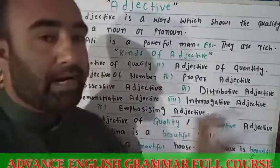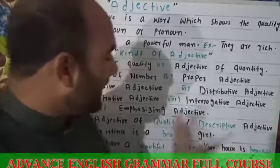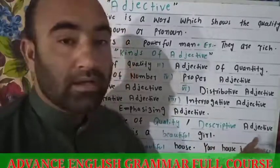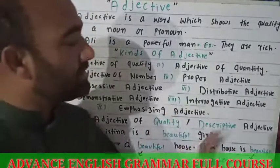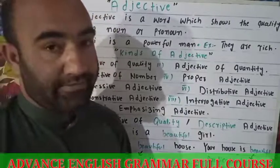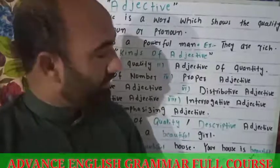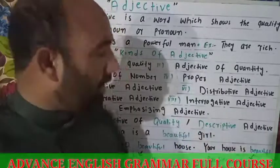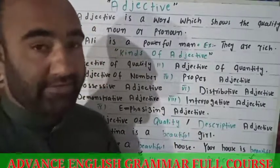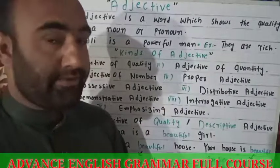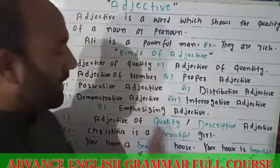First we have to talk about adjective of quality. This is the first kind of adjective. Adjective of quality are also called descriptive adjective — both names are correct. Keep in mind: out of the nine kinds, adjective of quality is also called descriptive adjective, while the remaining eight kinds are called limiting adjective or restrictive adjective.